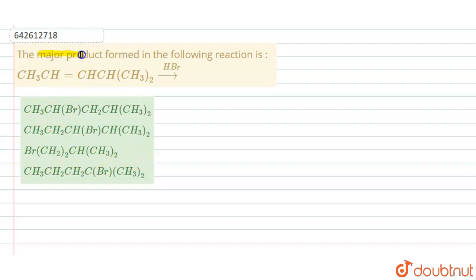So we have to find the major product. The reaction is CH3CH=CH(CH3)2 when it is reacted in presence of HBr. Which is the major product? Now this is alkene and this is hydrohalogen acid HBr.